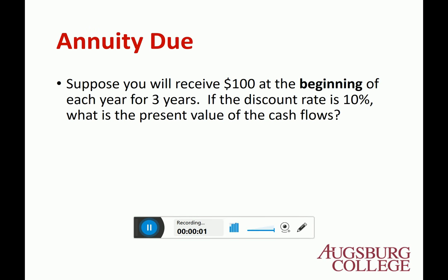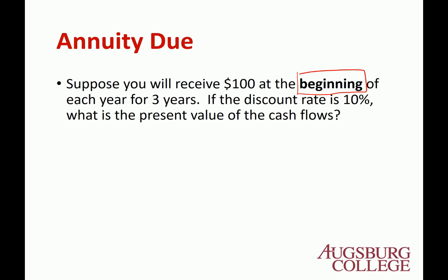Hi, this is Annuity Due. The only difference between the Annuity Due and the Ordinary Annuity is the timing of the cash flow. The Ordinary Annuity timing is end; the Annuity Due timing is beginning. That's the only difference between the two.